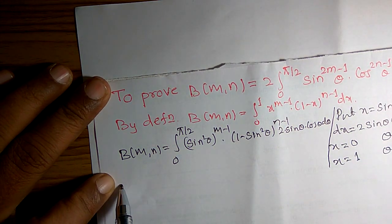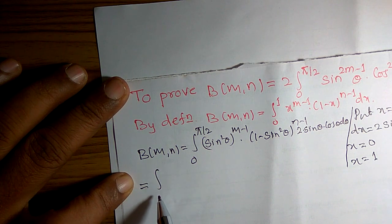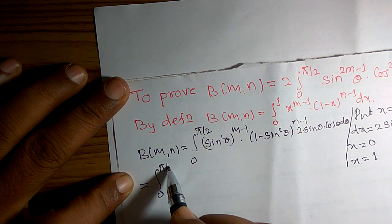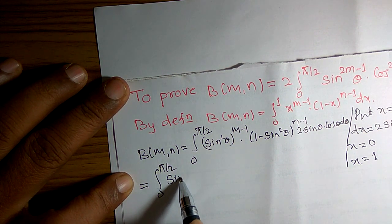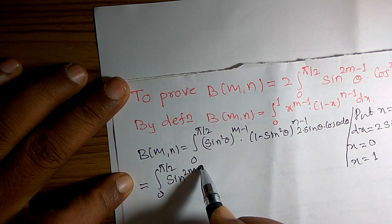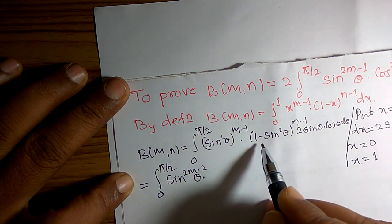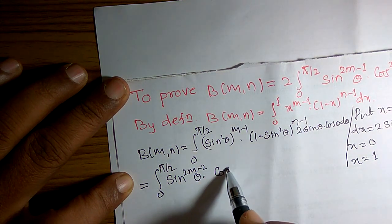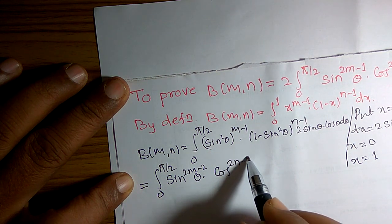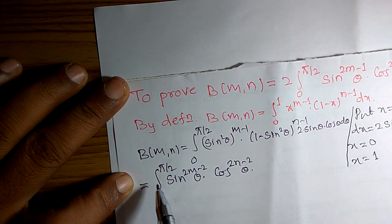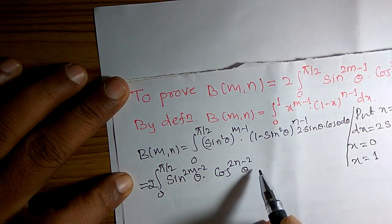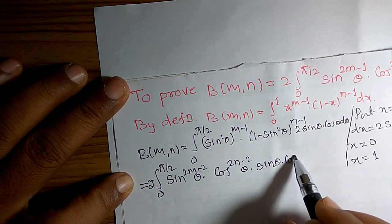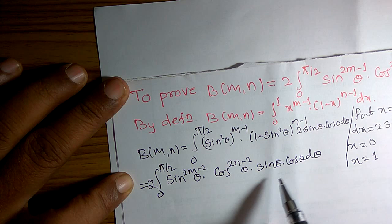This is equal to integral 0 to pi by 2 of sin raised to 2m minus 2 theta. 1 minus sin square theta means cos square theta, raised to n minus 1. 2 is constant, written outside: sin theta into cos theta d theta.